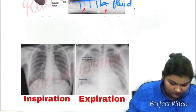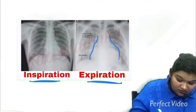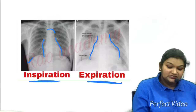X-rays are taken on inspiration rather than expiration. On expiration there is very much blurring of the cardiac shadow, but on inspiration you can appreciate the cardiac shadow, the arch, the costophrenic angle, and the ribs properly. This is the reason why x-rays are taken in the inspiration condition.